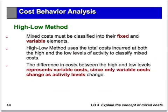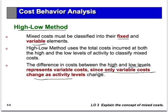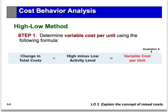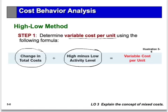To break out a mixed cost, we use what's called the high-low method. Every mixed cost has a fixed portion and a variable portion. The difference in cost between the high level of activity and the low level of activity represents the variable portion, because only variable costs change. The variable cost per unit equals the total change in costs divided by the change in activity.